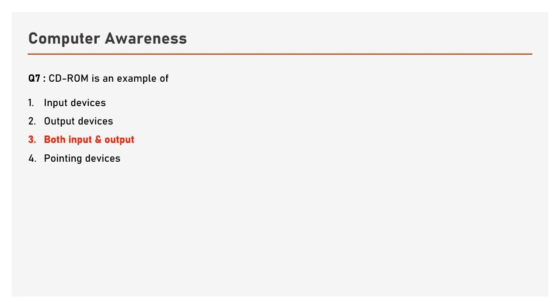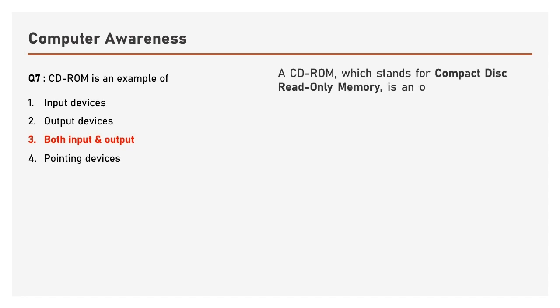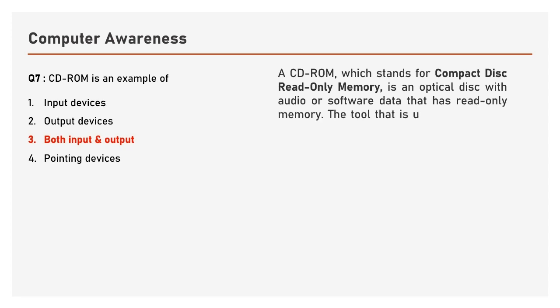Question number 7: CD-ROM is an example of — options are Input devices, Output devices, Both input and output, Pointing devices. The answer is Both input and output. A CD-ROM, which stands for Compact Disc Read-Only Memory, is an optical disc with audio or software data that has read-only memory. The tool used to read data from it is a CD-ROM drive or optical drive.